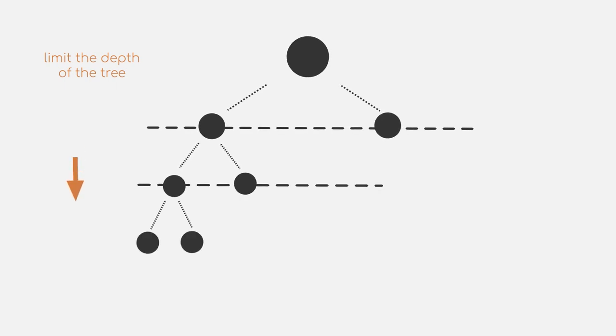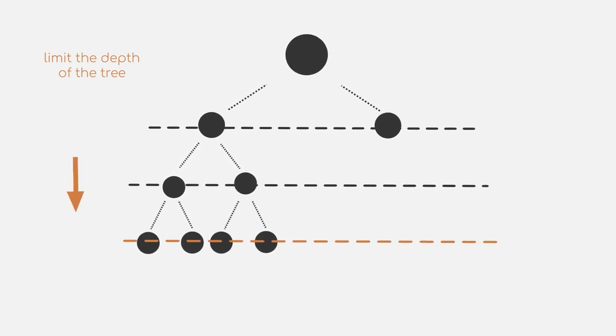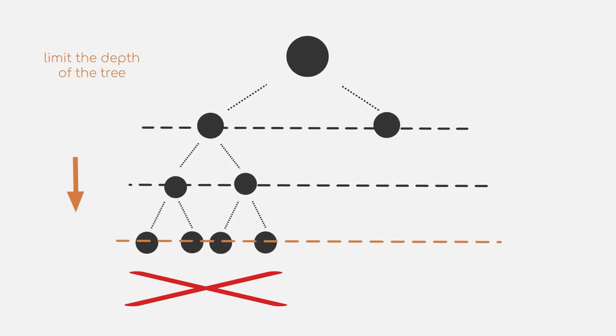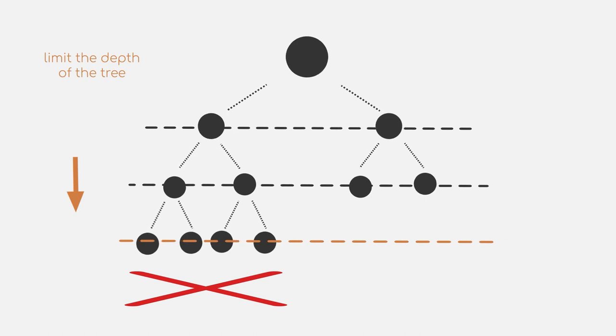One way to overcome this limitation is to limit the depth of the tree. This means that as soon as one branch of the tree has hit the defined depth, we will no longer expand it. Other branches, which are shorter, might still be explored, however, creating a potentially better model than just limiting the number of overall splits.